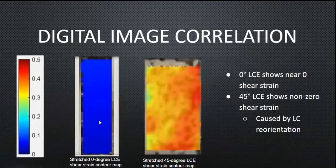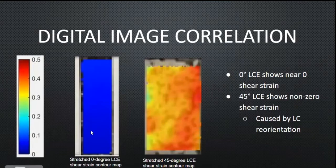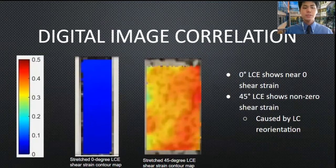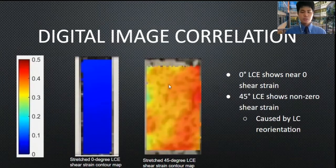This is further shown in the digital image correlation test. We took a 0-degree LCE and calculated the shear strain within it. At 0 degrees, the liquid crystals will not rotate because they're already aligned with the force, so there's zero shear strain. But with the 45-degree LCE, you can clearly see obvious shear strain of about 35-40%, and this is caused by the liquid crystals reorienting inside the 45-degree LCE.